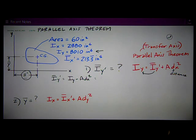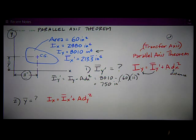Iy is 8010. That's the moment of inertia about the y-axis that I've computed somehow in another way. Minus the area, which is 60, times that dx distance, which is 11, and I square it. And I get that the answer to that is 750 inches to the fourth. Easy. Just required a rearrangement of the parallel axis theorem.